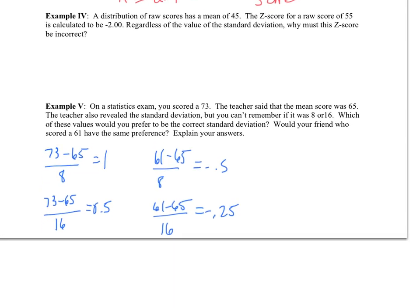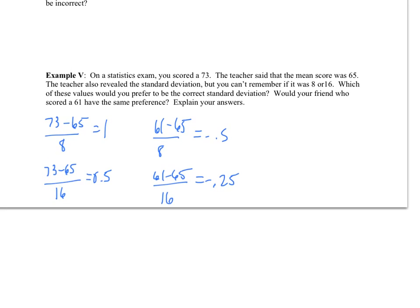In example five, we have a teacher who gave us statistics, but nobody could remember which one was the standard deviation. If you scored above the mean, then you would want the standard deviation to be smaller because then your z-score would be larger. In this case, I would have scored one standard deviation above the mean, which sounds more impressive. For your friend who scored below the mean, they would want the standard deviation to be larger because then they would have performed only 0.25 below the mean as opposed to 0.5 below the mean.